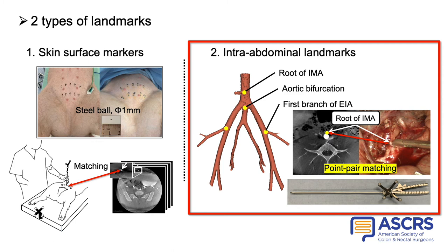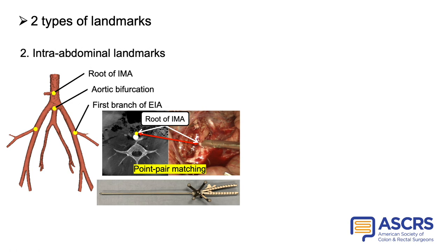Therefore, we focused on intra-abdominal landmarks as a second type of landmark for registration. There are several structures that are easily identifiable in the abdominal cavity, such as vascular branching points. In particular, since lateral pelvic lymph node dissection is usually performed after rectal resection, structures in the retroperitoneum revealed by rectal resection can be used as landmarks for registration.